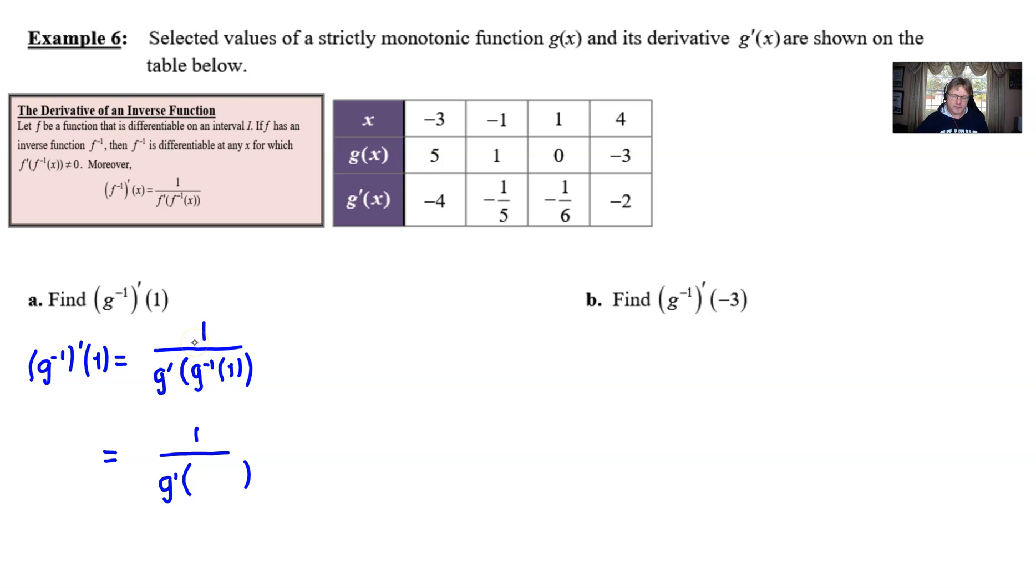So, a student would have to understand that this x value of one is not so much the value of x for this inverse. It's a value of x for the original function. So, what that means is I would have to search out the g(x) row, find the one there, and then the output would actually be this particular x. So, I'm looking for the output that's going to take the place of this g inverse value. Remember, they've traded places, essentially. What was an x is now a y, and vice versa.